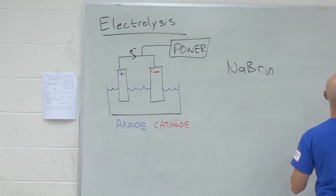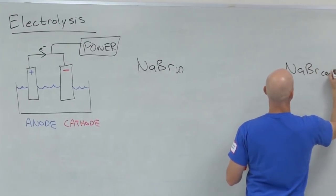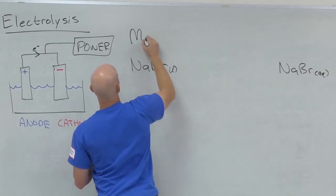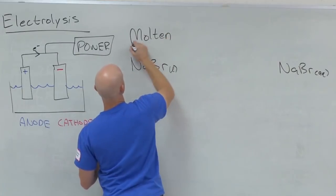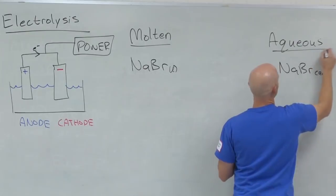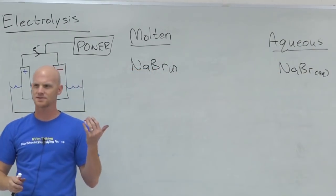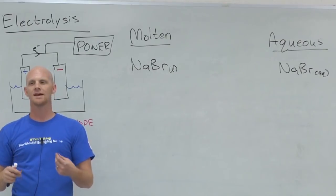And so this is your two types of electrolysis. You can do what's called molten electrolysis or aqueous electrolysis. But you can't use a solid salt and try and do electrolysis because the ions aren't able to move in a solid salt.